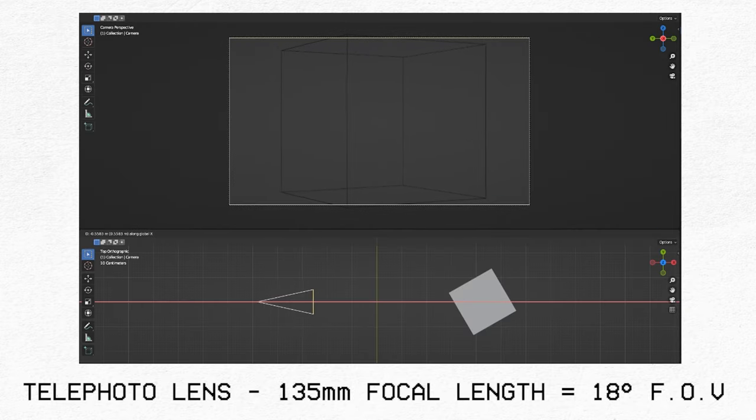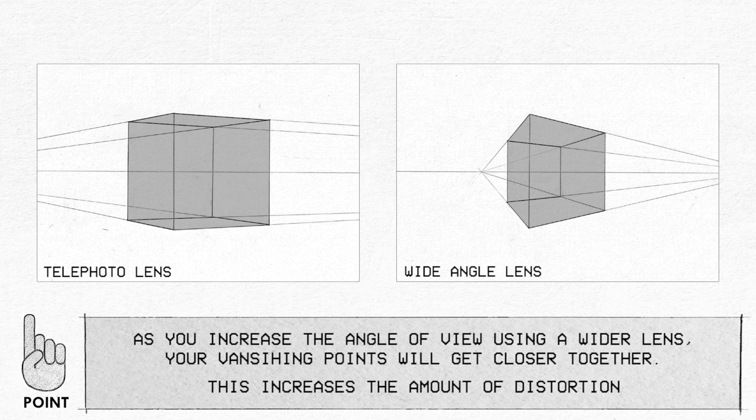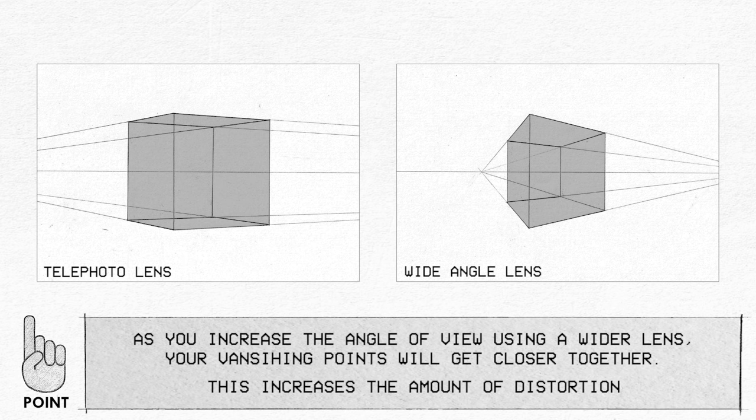And so to account for this change in the amount of magnification between lenses, you'll want to position your camera closer or further away from the subject, depending on what lens you do use. In general, the larger your angle of view, the closer you'll want to position the camera to the subject and vice versa.